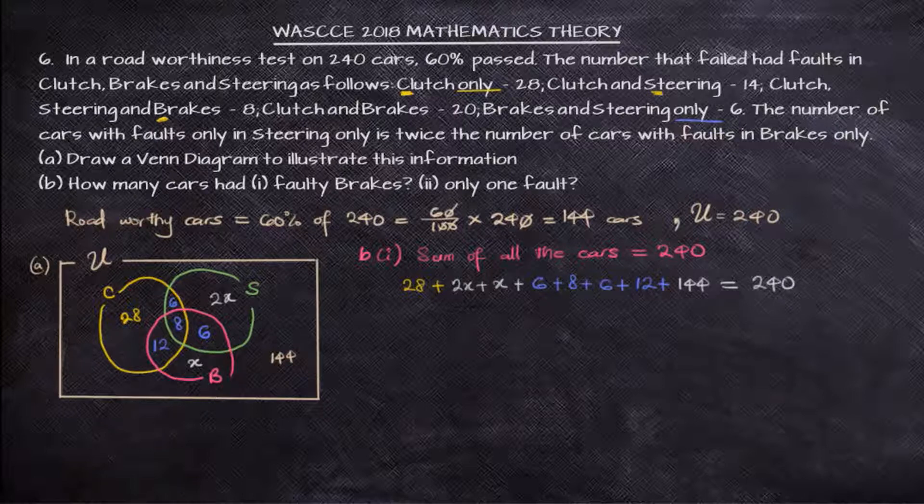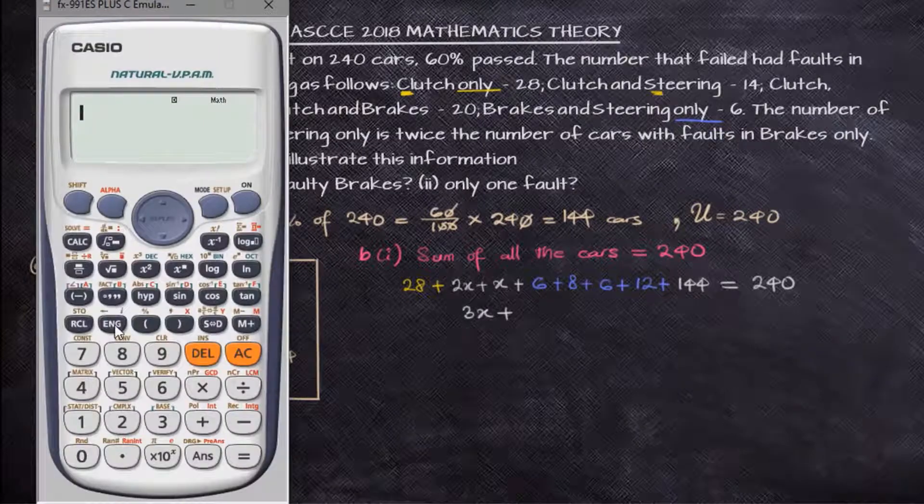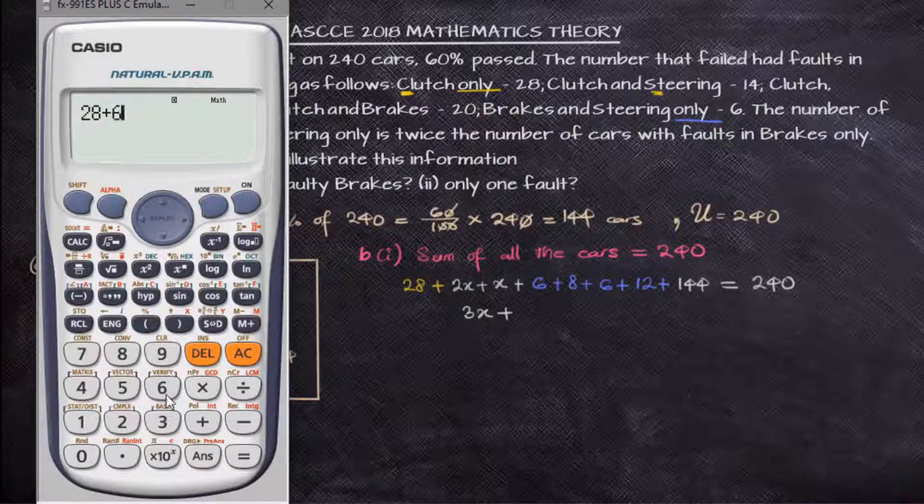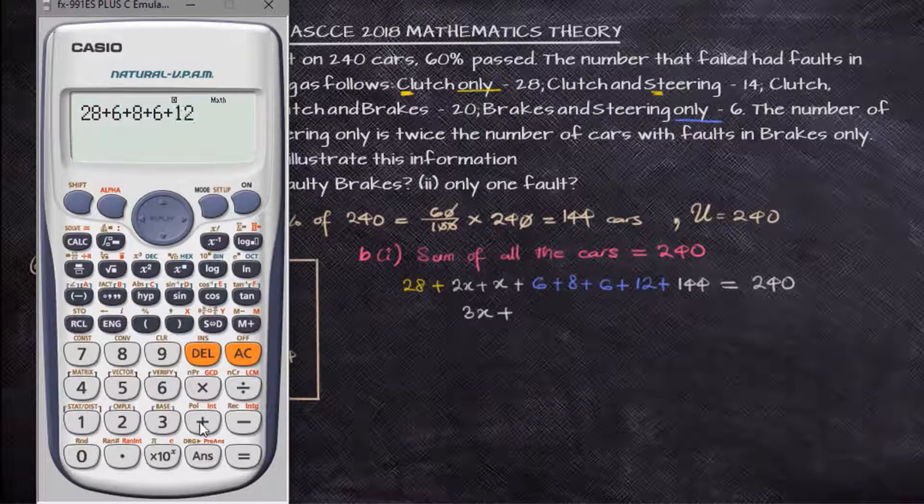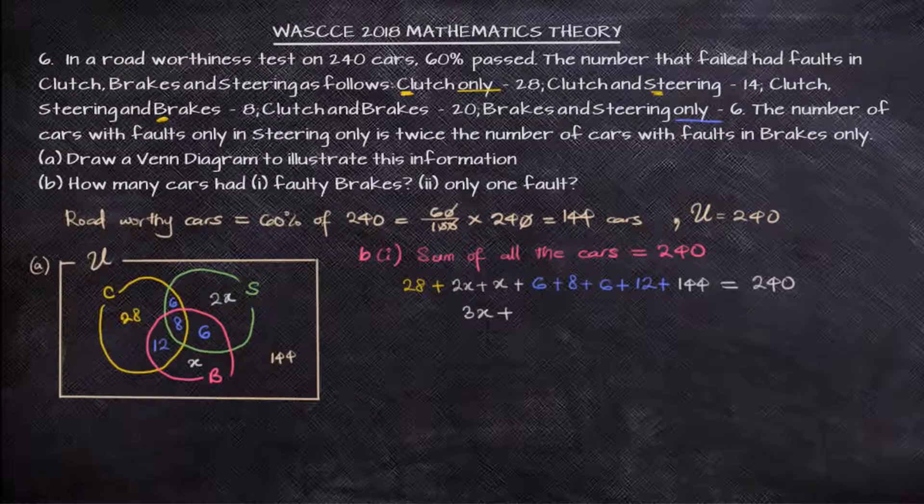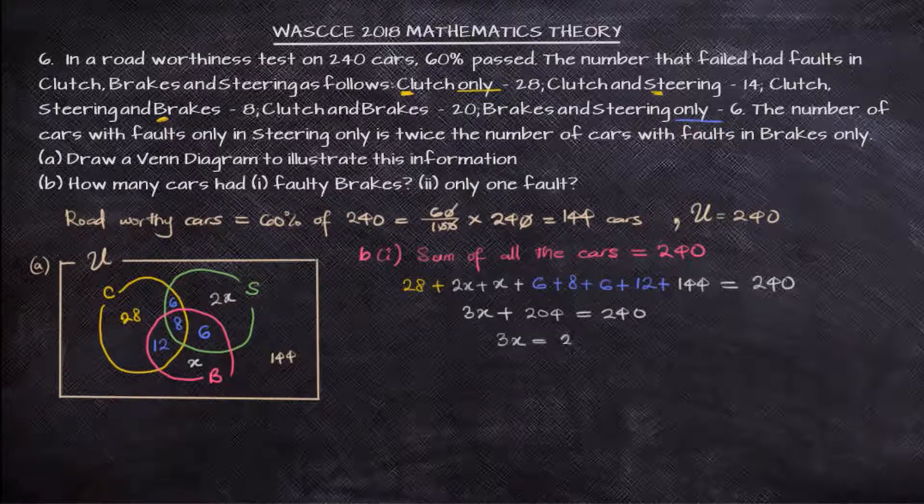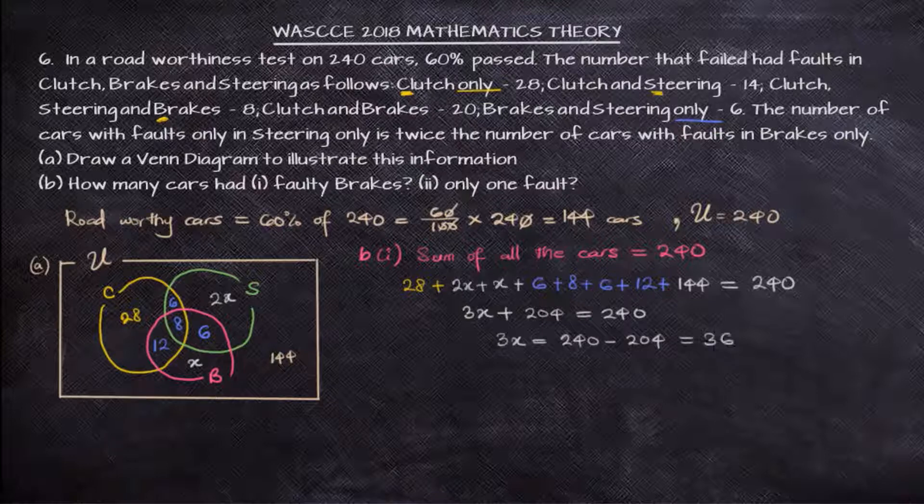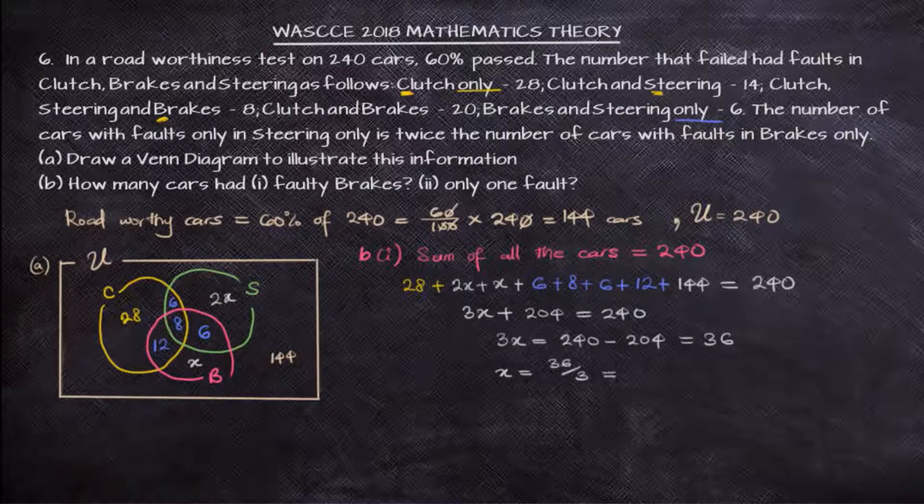the 6 plus 8 plus 6 and 12 plus the 144 outside is equal to 240. With this we can see that 3x plus, and let's bring out our calculator, 28 plus 6 plus 8 plus 6 plus 12 plus 144, that's 204. So 3x plus 204 is equal to 240. If we collect like terms, 3x will be equal to 36, such that x will be 36 over 3. When we divide by 3, that will be 12 cars. So our x is 12 cars.